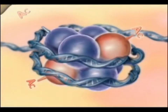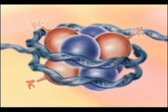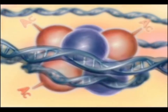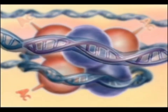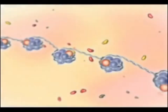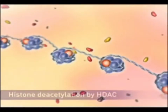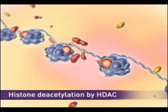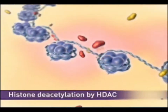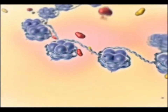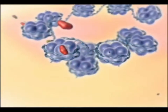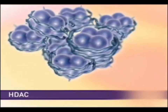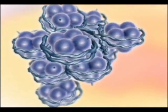eight histone proteins, forming a complex known as a nucleosome. Unlike most proteins which have an overall negative charge, histones are positively charged due to an abundance of amino acids arginine and lysine. These are thus strongly attracted to the negatively charged phosphate group of DNA. The histone core thus acts as a magnetic form that promotes and guides the coiling of DNA.